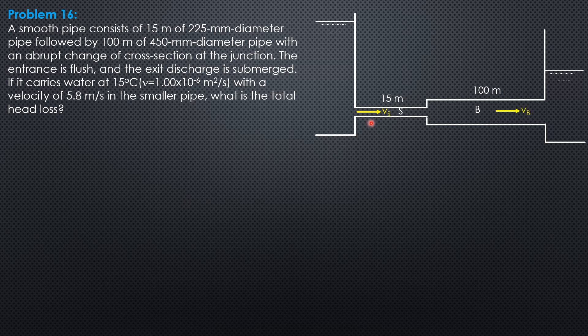So we'll call the velocity in the smaller pipe Vs, in the bigger pipe Vb. Take note that for the smaller, friction and this entrance loss coefficient times velocity head in the smaller pipe, then plus the sudden enlargement, plus friction in the bigger pipe.